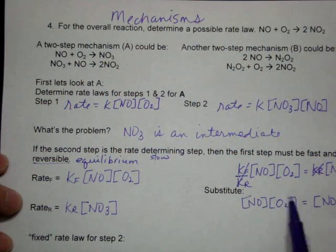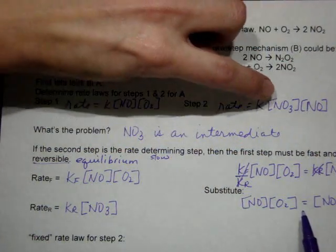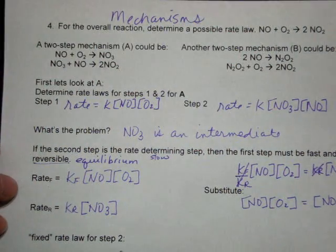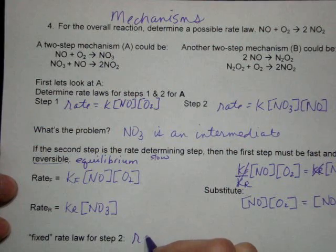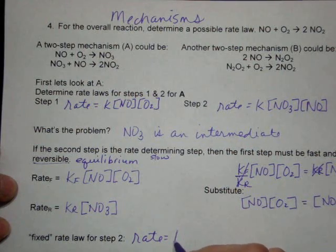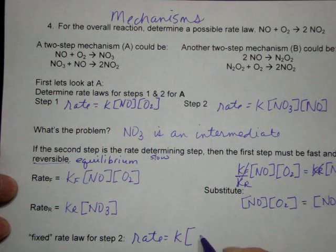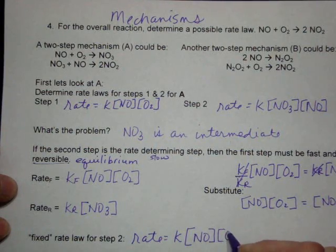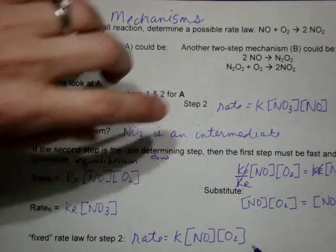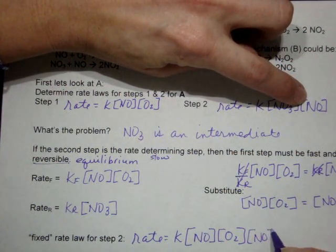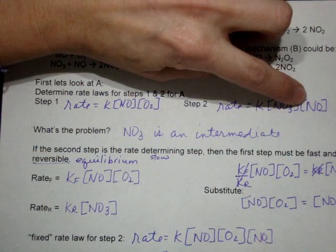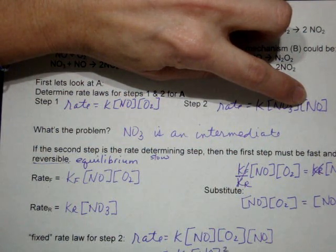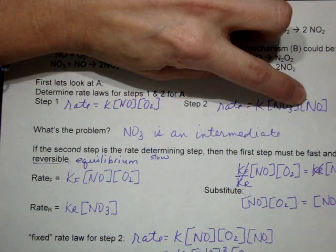Then we can use this information, plug it in where we had the NO3 here. We can replace it and fix our rate law for step two. So it would become rate equals K. And now instead of NO3, we would have NO times O2. And then we had another NO here. So then we would need to combine them. It would be K NO squared O2.